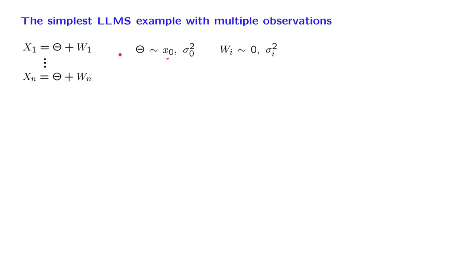This is the usual assumption. But actually, in the linear estimation problem, we do not need to make an independence assumption. It's enough for our purposes to just assume that they are uncorrelated. So we will assume that the correlation coefficient between any two of these random variables is equal to 0.